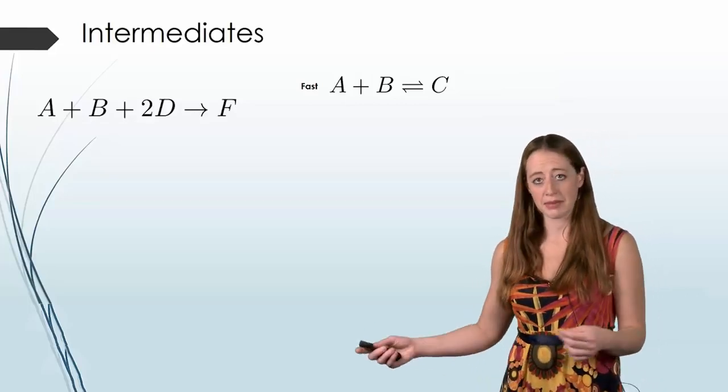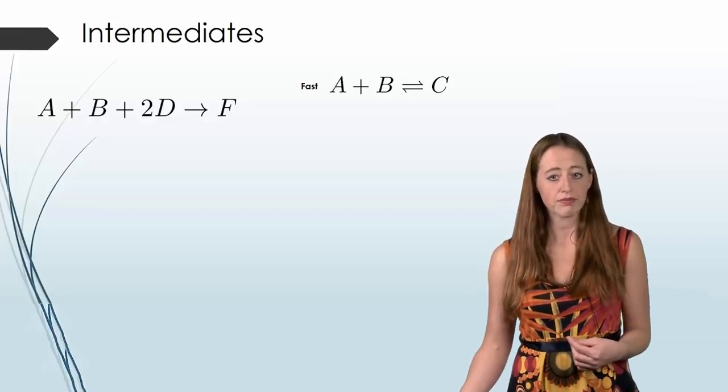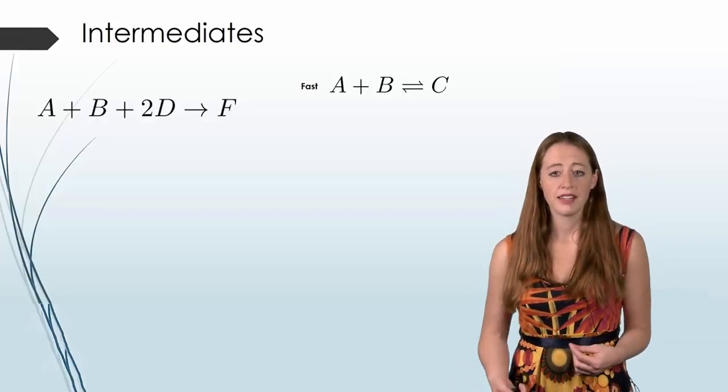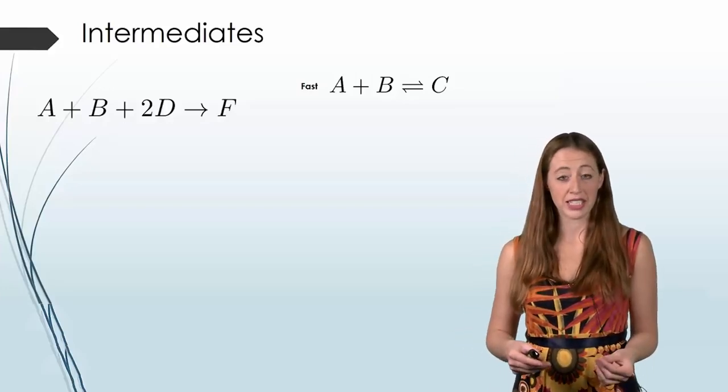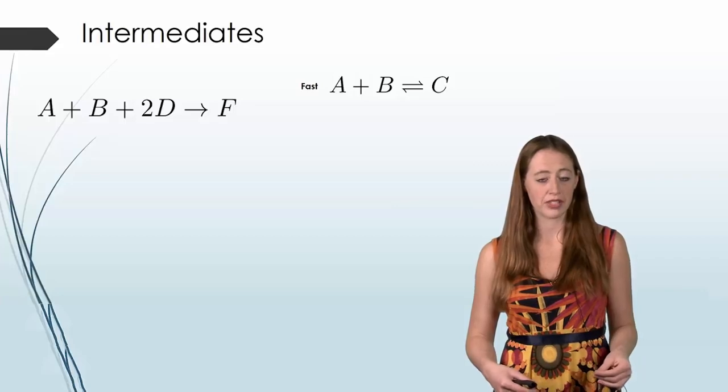Remember that equilibrium means that something is going back and forth very quickly. If this happens, there's several different things that we can do to kind of cheat the system a little bit and get the intermediates out of the equation.